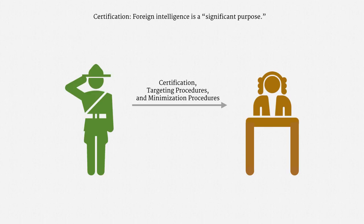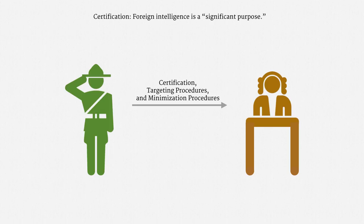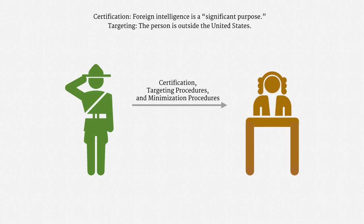Note just how broad that is. NSA analysts can invoke Section 702 authority for an exceedingly wide variety of purposes. They don't need probable cause or reasonable articulable suspicion or even relevance. Nor does there have to be a foreign power or an agent of a foreign power. All that's required is that foreign intelligence is a significant purpose. The filing also includes targeting procedures, explaining how the executive branch will make reasonably sure that surveillance targets are outside the United States. Oddly, the executive branch doesn't have to explain how it will avoid inadvertently targeting U.S. persons.